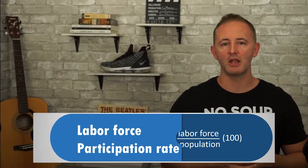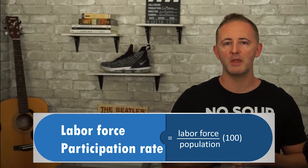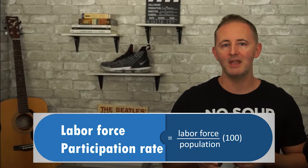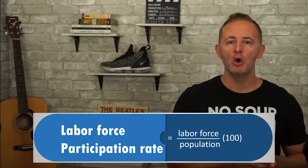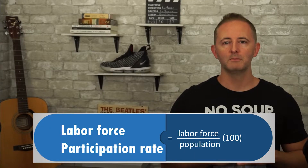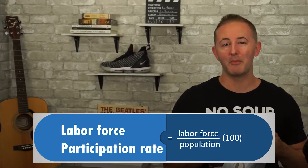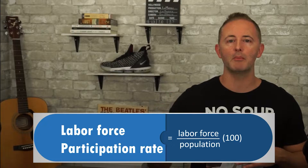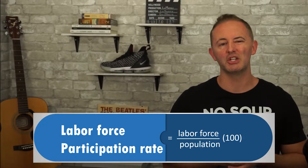This is problematic because the unemployment rate is supposed to measure the health of the labor market, but this shows how the measurement can be misleading. One more calculation is the labor force participation rate, which measures the percentage of people in the population who are part of the labor force — meaning they either have a job or are actively seeking one. Sometimes we get more specific and say working-age population, or age 16 and up, but it doesn't change anything.